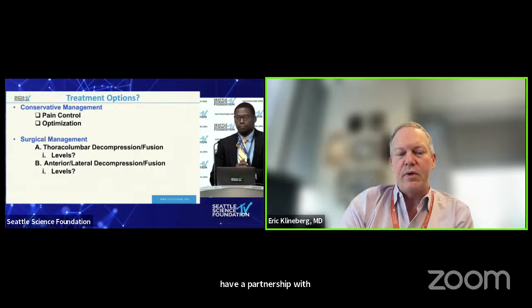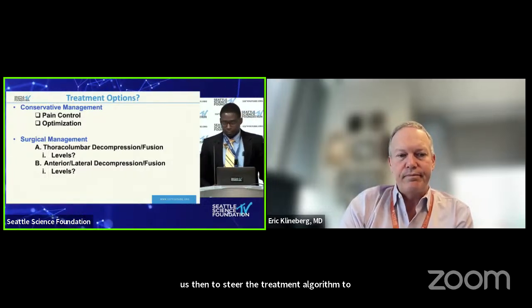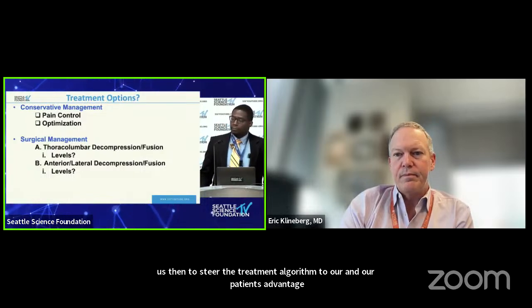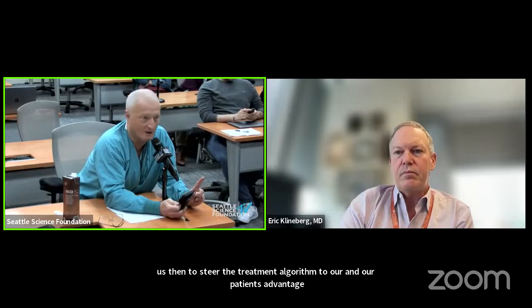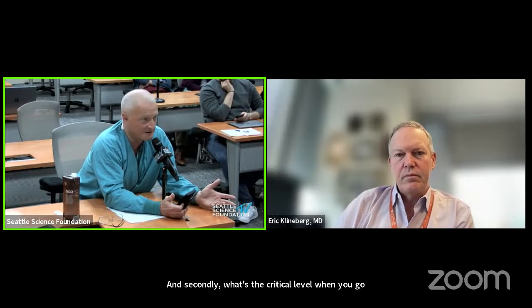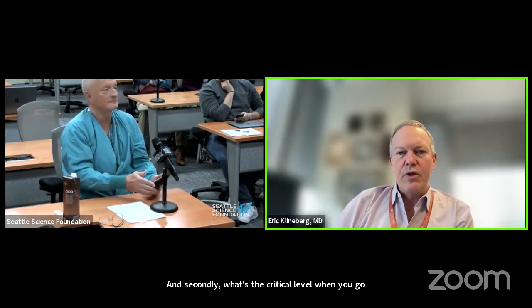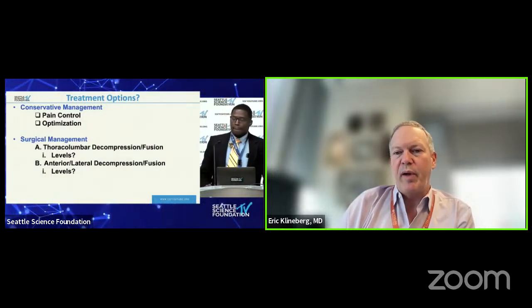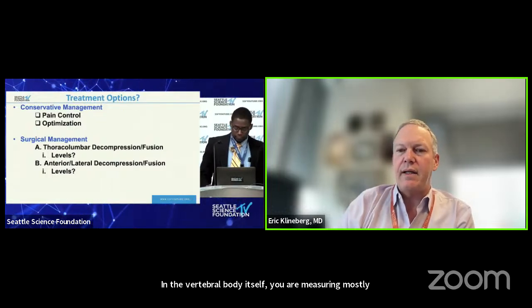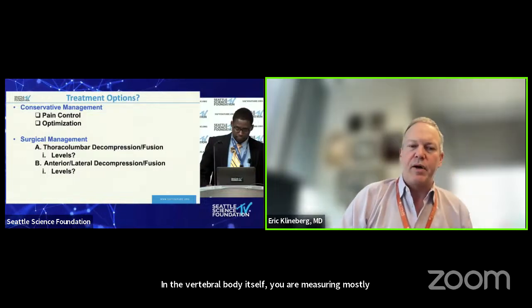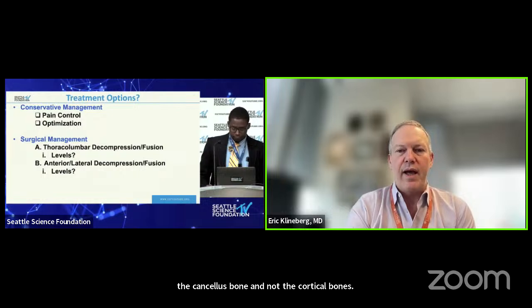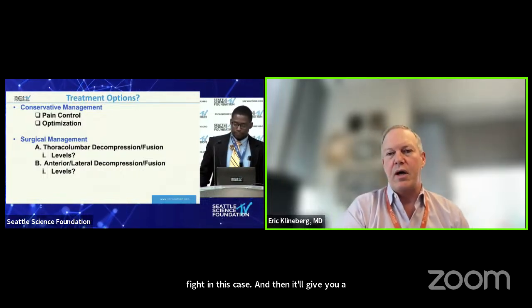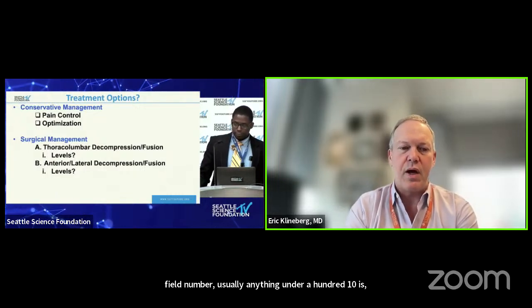What we've done here is train our PAs and APPs to help manage bone health — we have a bone health clinic through them, with a partnership with endocrinology that allows us to steer the treatment algorithm to our patients' advantage. How do you measure Hounsfield units on CT? Get a region of interest on any PACS system, select a circle within the vertebral body measuring cancellous bone — not the osteophyte. Anything under 110 means be careful, indicative of osteopenia or osteoporosis. You can measure at subsequent levels and choose the highest Hounsfield level as your UIV end anchor.